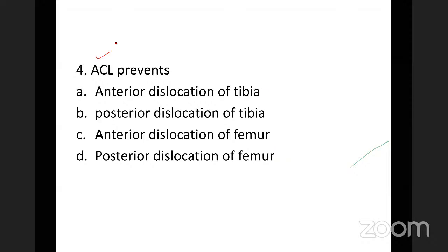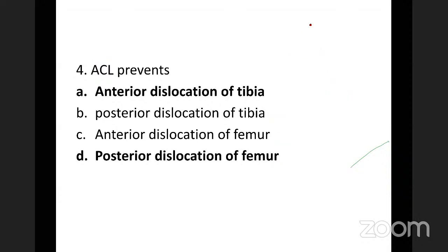MCQ: the anterior cruciate ligament prevents anterior dislocation of the tibia, because it is attached to the anterior aspect of the tibia, and also prevents posterior dislocation of the femur, because it is attached to the posterior end of the medial surface of the lateral condyle of the femur.